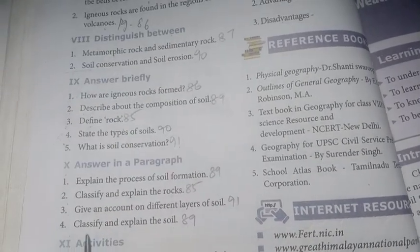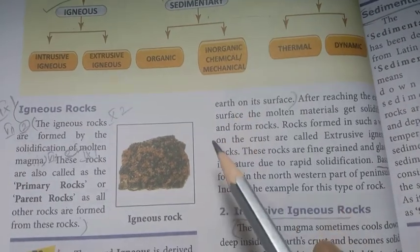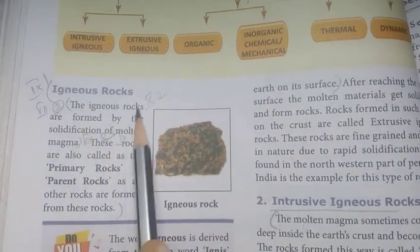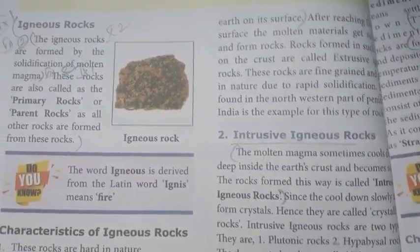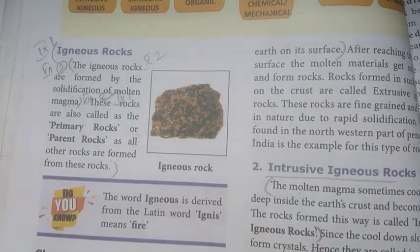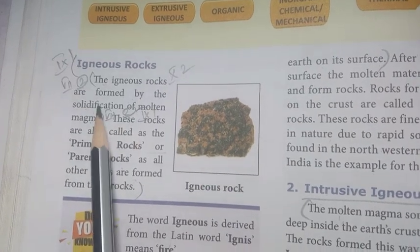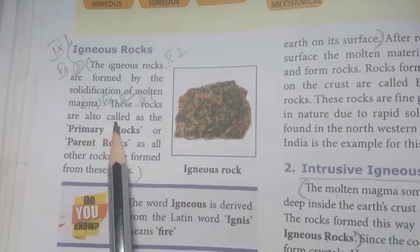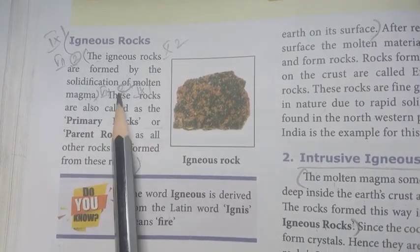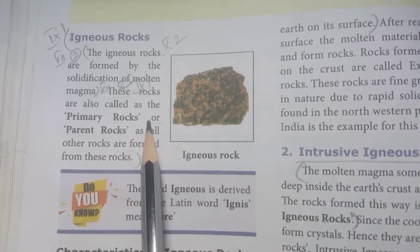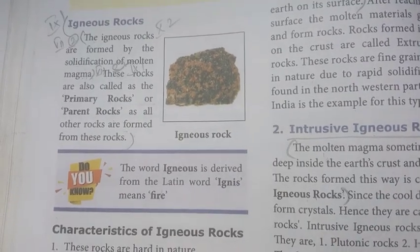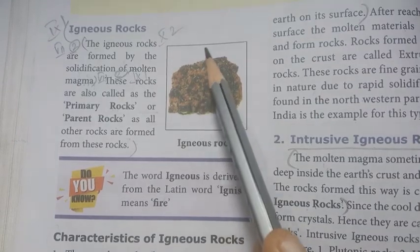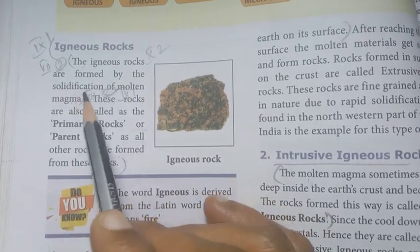Igneous rocks — one of the ways they are formed is on page number 86, igneous rocks topic. The igneous rocks are formed by the solidification of molten magma. These rocks are also called as the primary rocks or parent rocks, as all other rocks are formed from these rocks.